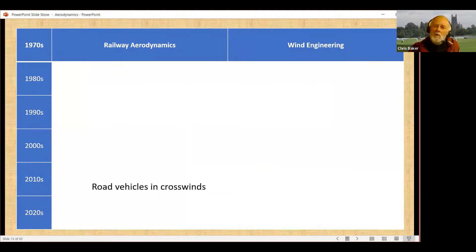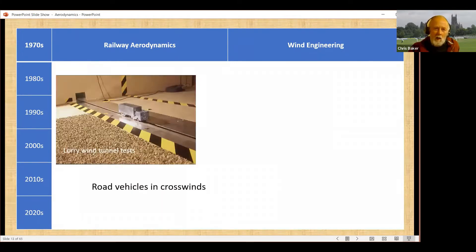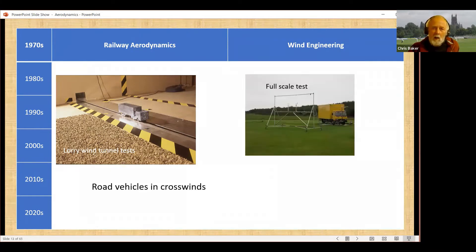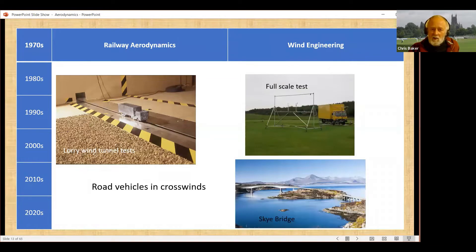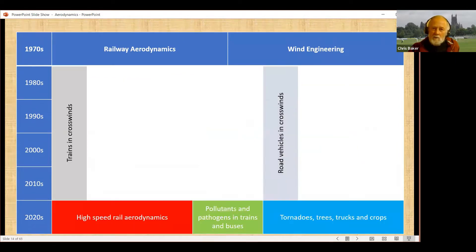Alongside it, I also looked at road vehicles in crosswinds; it was a natural crossover. Looking mainly at what I would call lorries—I guess you would be more comfortable with trucks—doing wind tunnel tests, full-scale tests. More recently, we've been looking at the risk of lorries blowing over on high-span bridges, like this bridge to the island of Skye in Scotland. So there's another strand that goes back to the 80s.